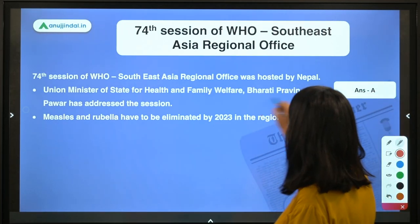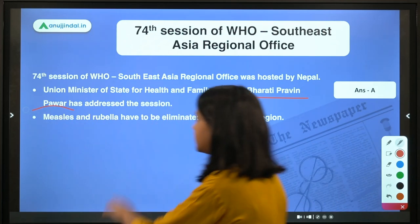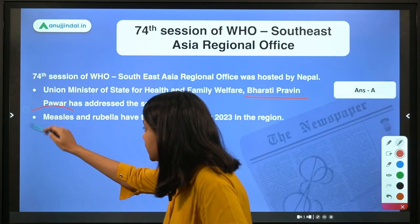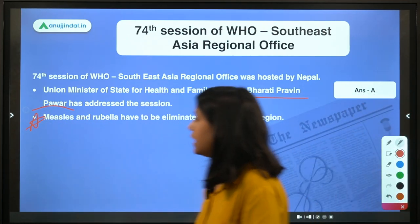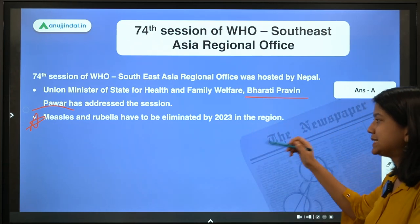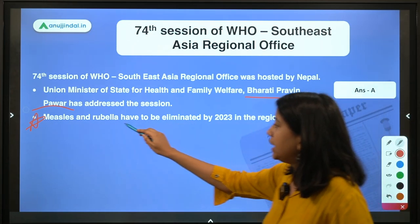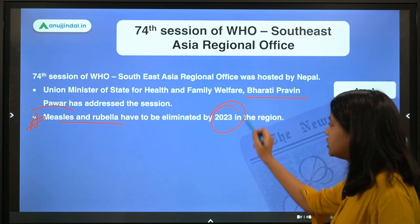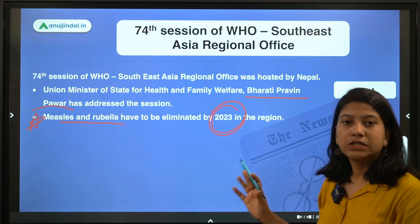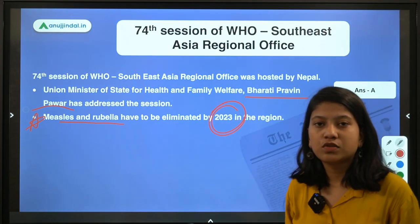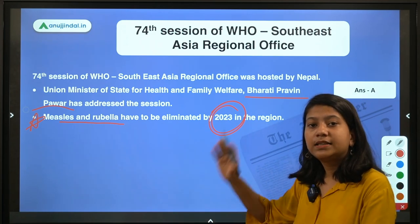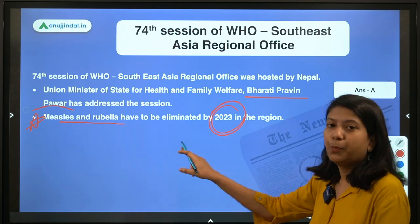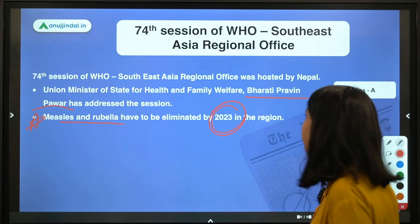Bharti Praveen Pawar is the name of the minister who participated. The most important announcement made during this session is that measles and rubella will have to be eliminated from the region by 2023. However, this is not a new announcement — it is a target that is reiterated again and again, but it is important for you to memorize it.